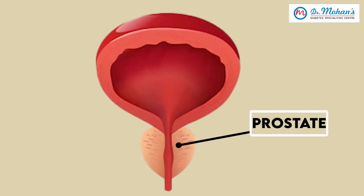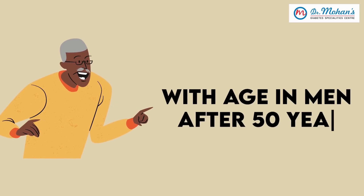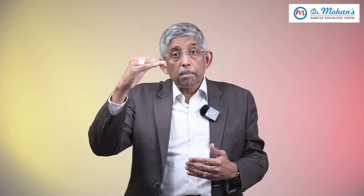Just behind the bladder there is one more organ in males called the prostate. I want to talk about this prostate because with age — in men after 50 years, sometimes even after 45 or after 60 years — it will start enlarging. It is related to your hormones: as your male hormones go down, your testosterone levels start going down, your prostate will start enlarging.